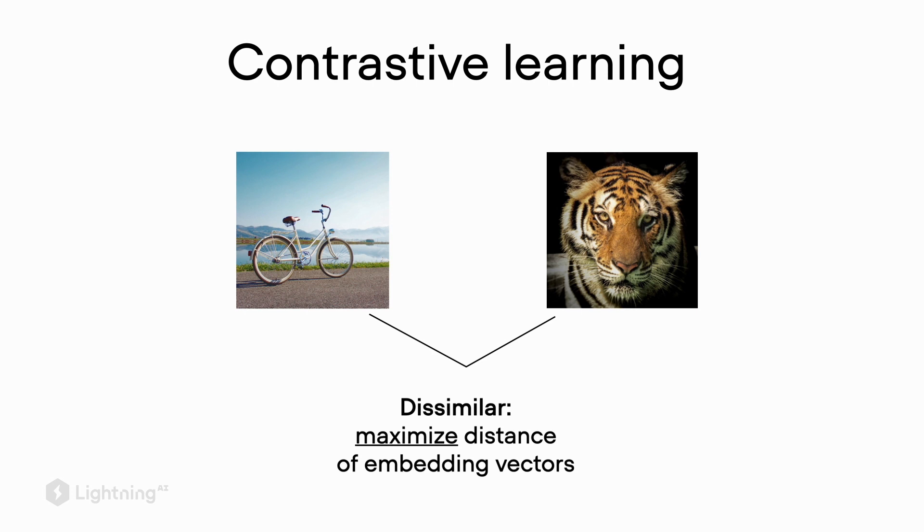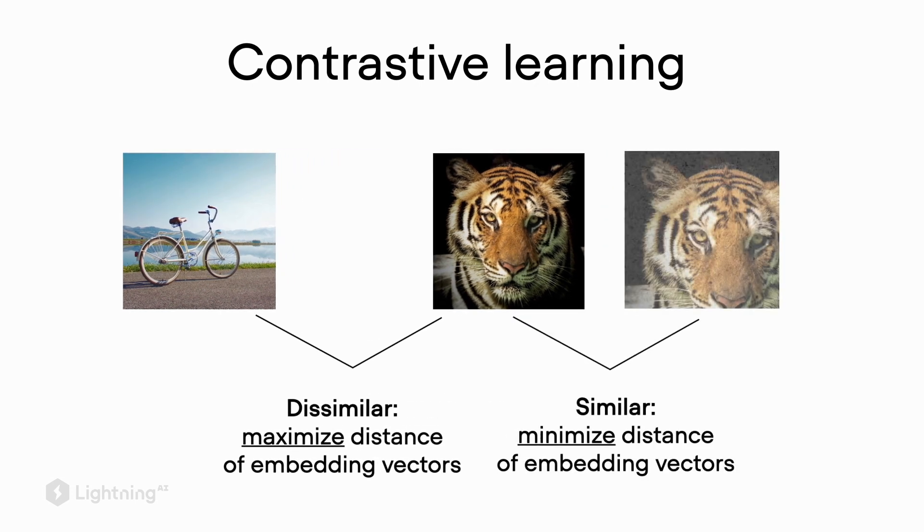On the other hand, if we have an augmented version of this tiger where I changed the brightness and cropped it slightly, these two tiger images are very similar. In this case, we want to minimize the distance. The key idea here is that we want to maximize the distance between two dissimilar images and minimize the distance between two similar images. Now what is this distance that we talk about and how do we measure it?